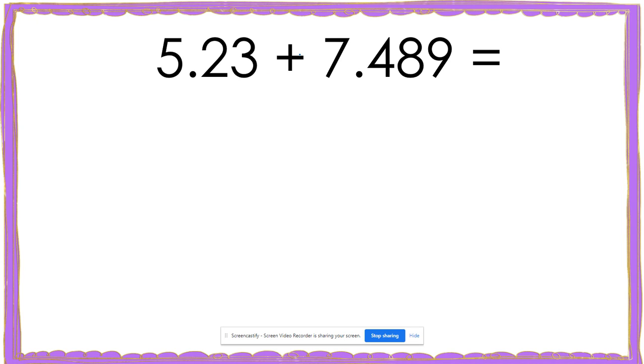To solve this problem, I'm going to take both of these addends and I'm going to line up their decimals. So I'll start with 5.23 and I'm going to add 7.489.